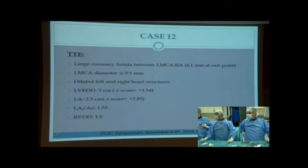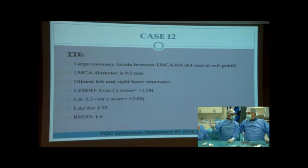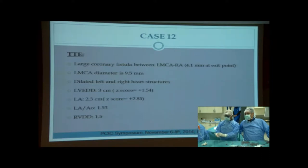On ECG, a large coronary fistula between the left main coronary artery and right atrium was seen. The left main coronary artery was dilated, 9.5 mm in diameter. Both left and right heart chambers were dilated.